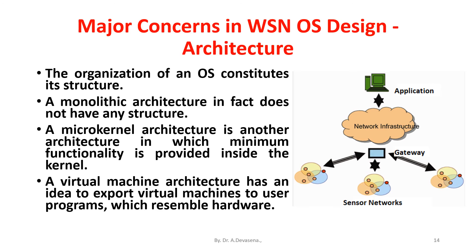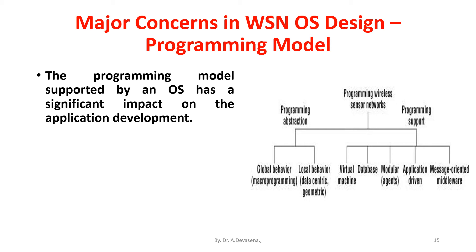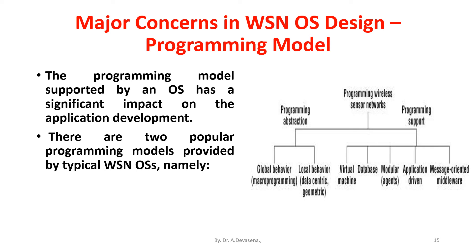Now we discuss the second concern: programming model. The programming model supported by an OS has a significant impact on application development. There are two popular programming models provided by typical wireless sensor network operating systems, namely event-driven programming and multi-threaded programming.